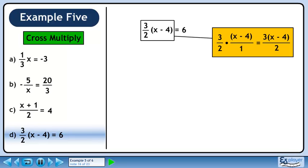Even though the left side looks complicated, if we multiply 3 over 2 and x minus 4, we can see that it can be combined into one fraction.